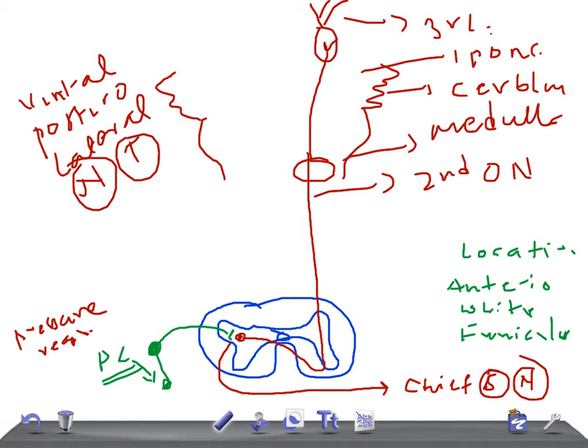The function of this tract is to transmit impulses of crude touch. Regarding lesion effects: a bilateral lesion of this tract leads to loss of crude touch sensation, as well as sensations like itching and tickling. A unilateral lesion causes loss of crude touch sensation on the opposite side below the level of the lesion.